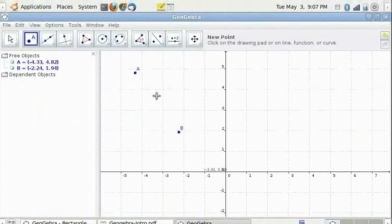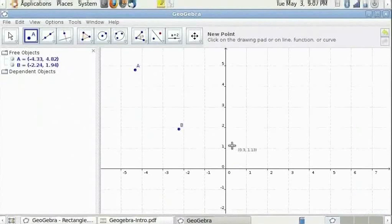Points A and B are free objects. That is they are not dependent on any other object in the drawing pad.